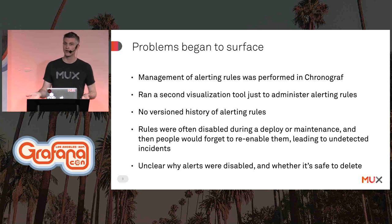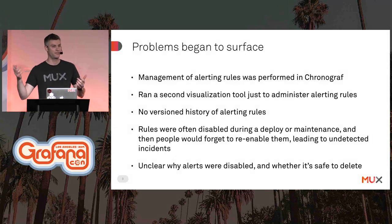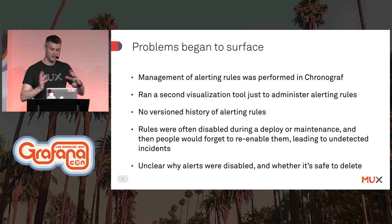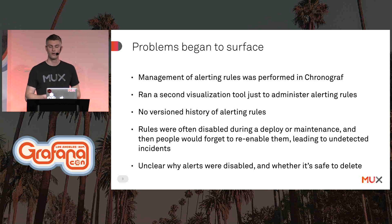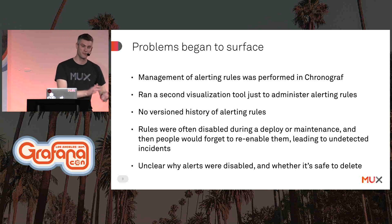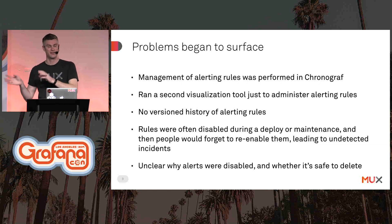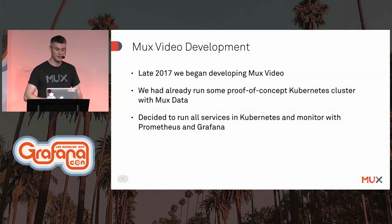We had already decided to have all our dashboards in Grafana, so we ended up running two metric visualization tools — Chronograf and Grafana — with Chronograf really just to administer alerting rules. That's not exactly optimal. Additionally, there was no accountability for changes people made to alerting rules through Chronograf. Somebody could go in, mess with the thresholds, or disable alerting rules outright. And there might have been a few times when alerting rules were left in a disabled state longer than they should have been.